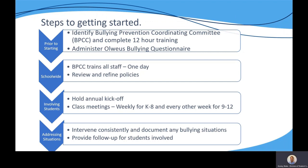So what does it look like to start the OVEAS bullying program in your school? Prior to starting, you should identify a Bullying Prevention Coordinating Committee, or BPCC, and complete the 12 hours of training. Committees should consist of classroom teachers — around one per grade level, discipline, or PLC — a school administrator, counselors, representatives from non-teaching staff such as aides, food service, and office staff. It could involve parents, maybe a school resource officer, and for middle or high school, it would be great to involve several students as well.